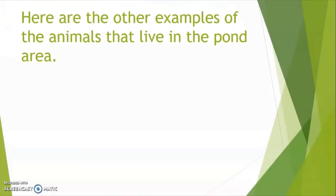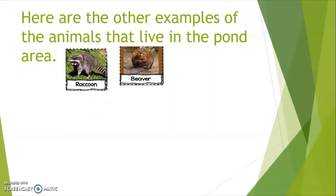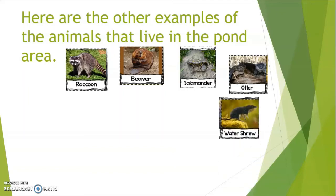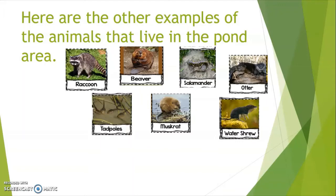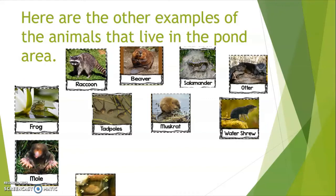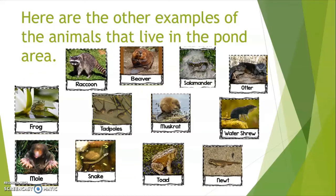Here are other examples of animals that live in the pond area: raccoon, beaver, salamander, otter, water shrew, muskrat, tadpoles, frog, mud snake, toad, and newt.